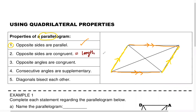Opposite sides means the left is the same length as the right. That's indicated by putting in a tick mark on each side. If I say that this side is eight centimeters, the right side would also have to be eight centimeters. That is what's meant by opposite sides are congruent.